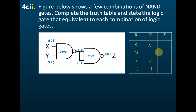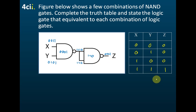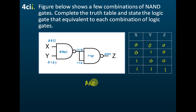Now from the truth table, can you tell me what the equivalent gate is? This is the truth table for an AND gate — 0,0 gives 0; 0,1 gives 0; 1,0 gives 0; 1,1 gives 1. So the equivalent gate is an AND gate.